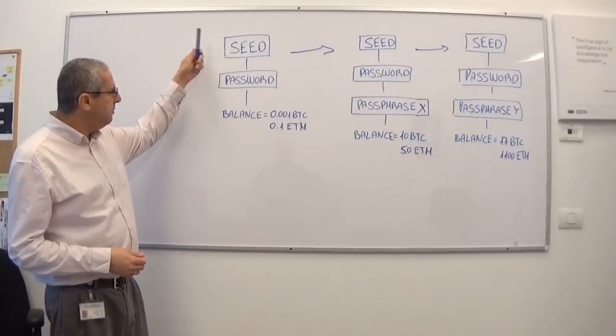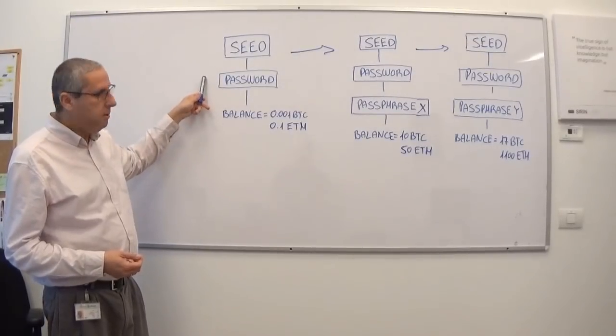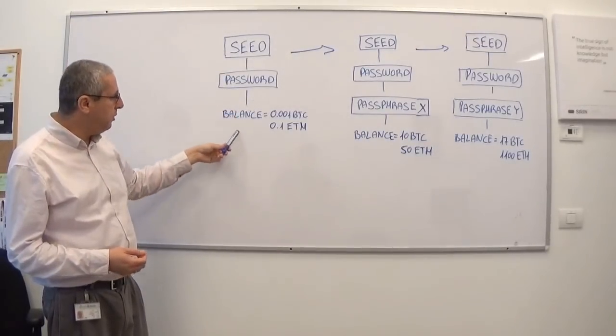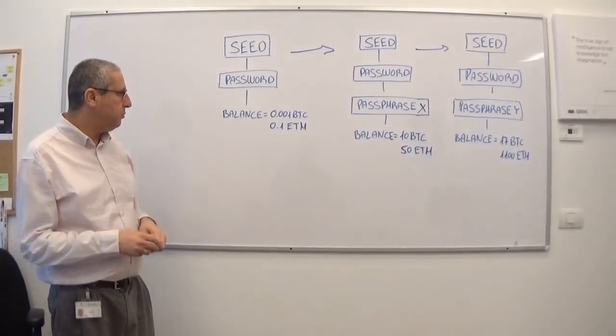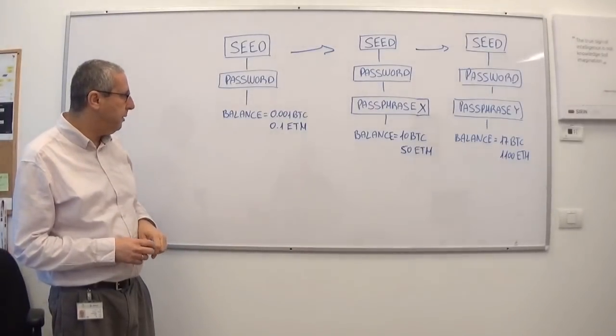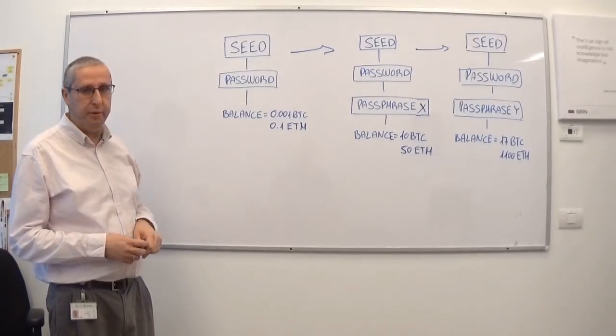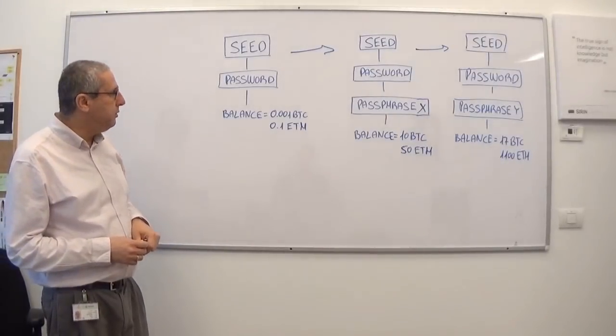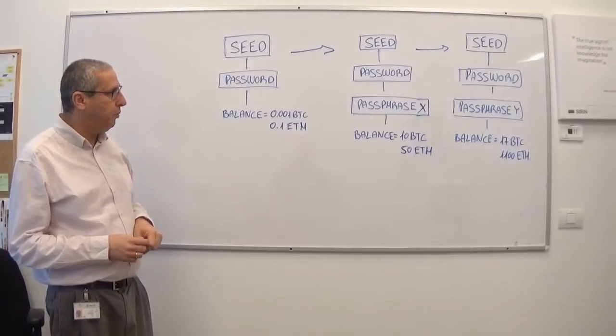As you remember, I have the seed, I have a password, meaning this is the regular wallet. In this wallet, I can hide or save a few amounts of Bitcoin and Ethereum. And if I want to divide it to an infinite number of wallets, what I need to do is to add an additional password, which is the passphrase.